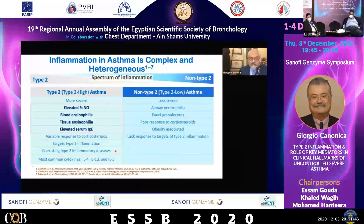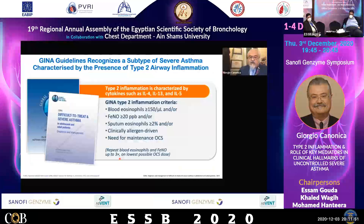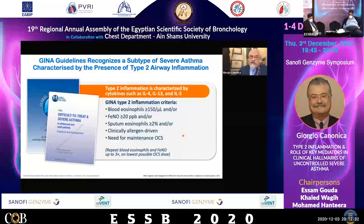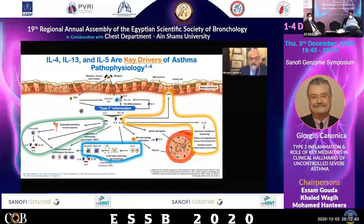There is a commonality — comorbidities with other type 2 diseases. GINA now recognizes data concerning blood eosinophils that should be considered at different stages: at least more than 150 per microliter; FeNO more than 20 ppb; sputum eosinophils more than 2%. The diagnosis of allergen-driven asthma should also be considered, as well as the need for continuous treatment with oral corticosteroids.